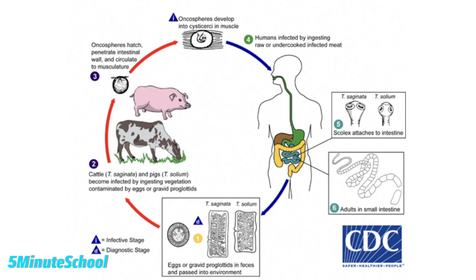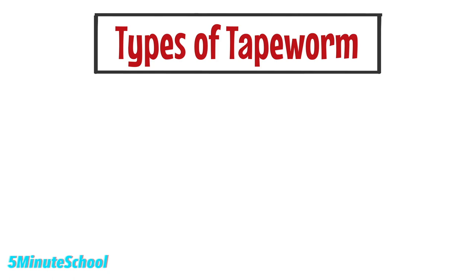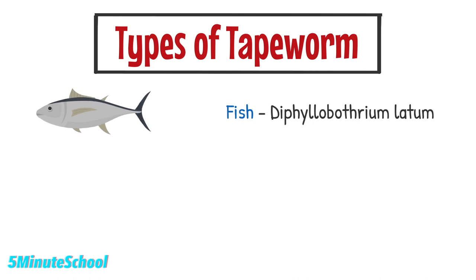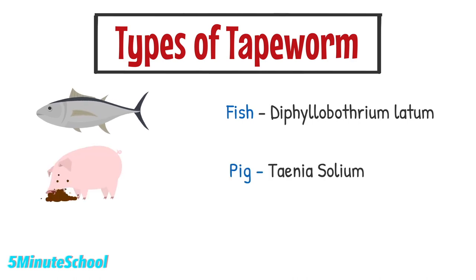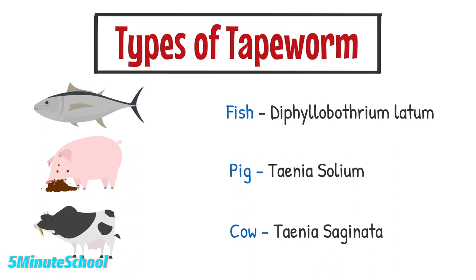Larvae can move into the muscle tissue of animals, so when you eat the meat from the animal, if it's not prepared and cooked properly, the tapeworm can transfer into your own body. There are various types of tapeworm classified according to which animal they come from. Diphyllobothrium latum comes from fish, Taenia solium is from pigs, and Taenia saginata is from cows.